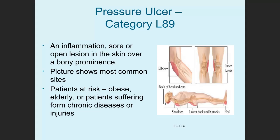Pressure ulcers are found in category L89. A pressure ulcer is an inflammation, sore, or open lesion in the skin over a bony prominence, like an elbow, a knee, or a heel. The picture here shows some of the most common sites. Pressure ulcers happen to people who are overweight or obese, elderly, or patients suffering from chronic diseases or injuries — people who are in bed a lot, so that there's a lot of pressure on that bony prominence.